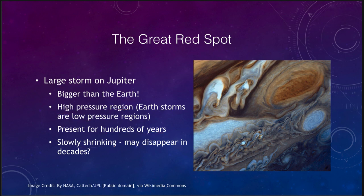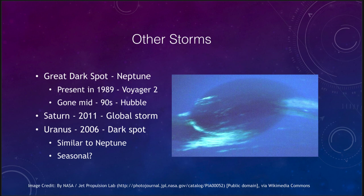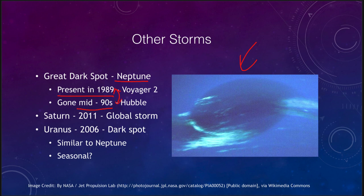The Great Red Spot is not the only storm in the outer solar system. On Neptune there was the Great Dark Spot, which was present in 1989 when Voyager 2 flew by Neptune and captured the image. Just a few years later in the mid-1990s the Hubble Space Telescope took images of Neptune and saw nothing — the Great Dark Spot had disappeared sometime between 1989 and the mid-1990s. We don't know how long it had been there before 1989, and we don't have a long enough baseline to establish statistics on how often these storms appear or how long they last.